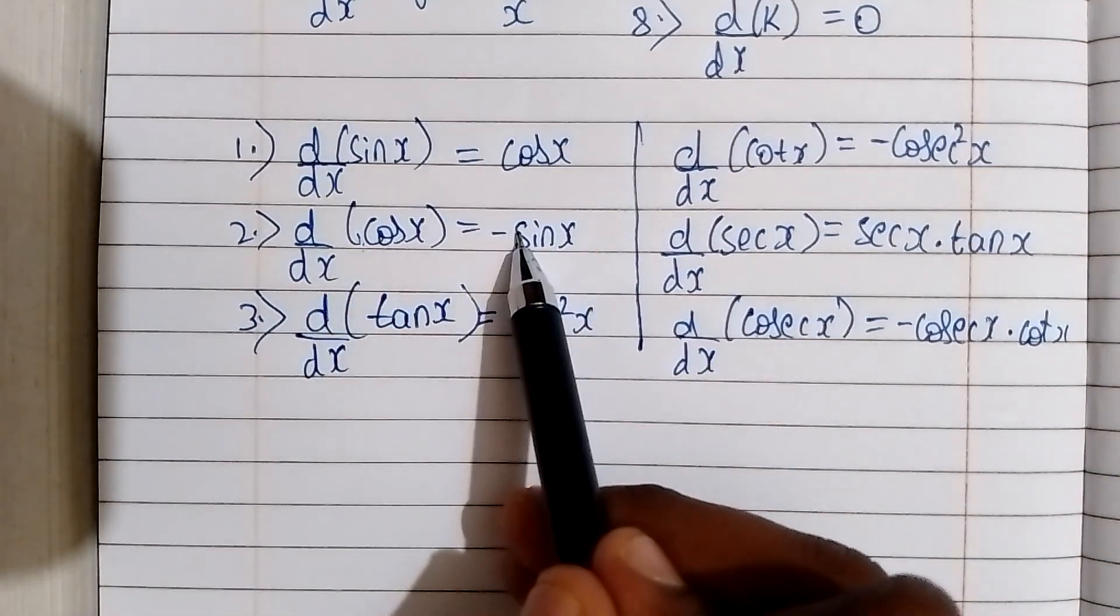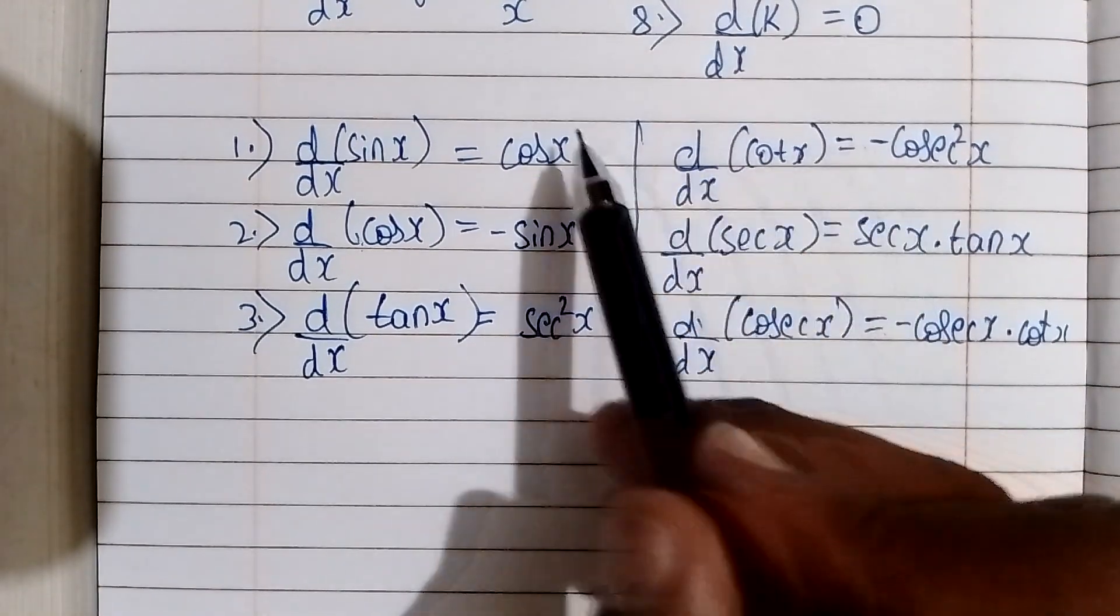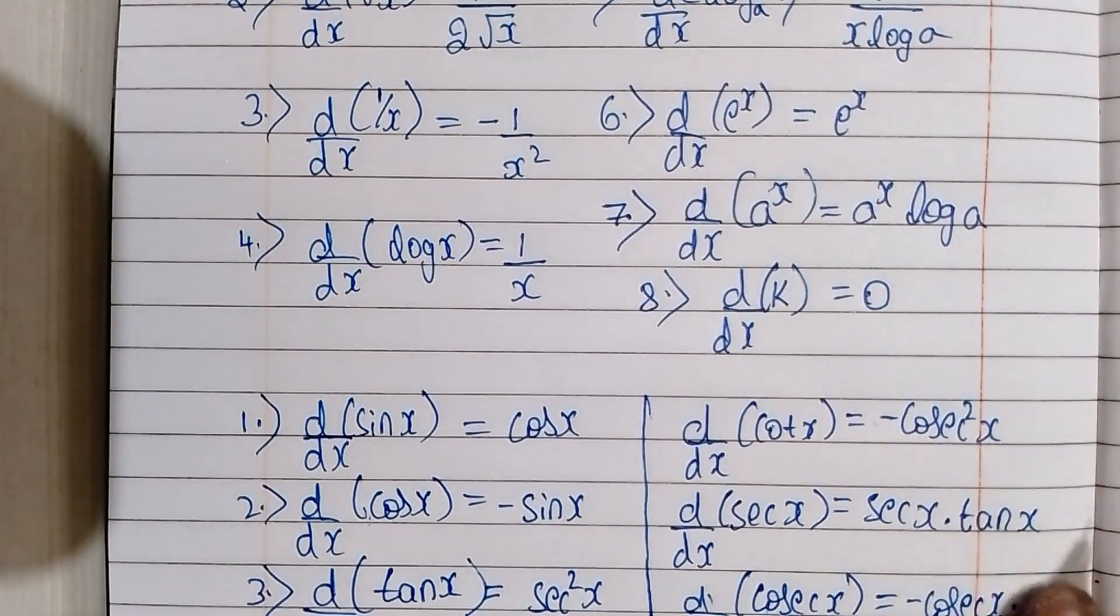d/dx of cos x is minus sin x, cosecant x is minus, cot x is minus. This is the formula. We get the differentiation formulas.